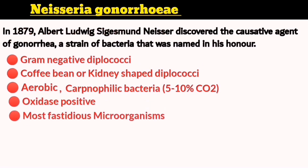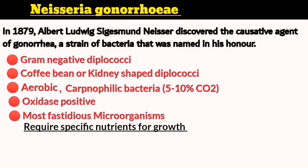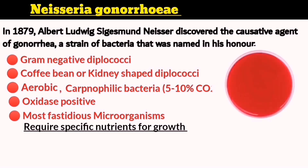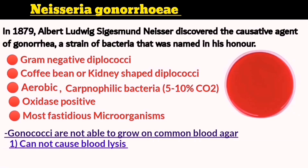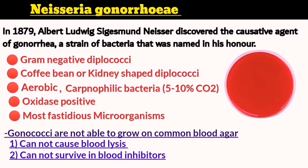Neisseria gonorrhea is a fastidious bacterium that cannot grow on simple media and requires specific nutrients such as blood, serum, and tissues found in enriched media. It cannot grow on blood agar because it cannot lyze the haemoglobin present, and because blood agar contains growth inhibitors to which N. gonorrhea is susceptible.